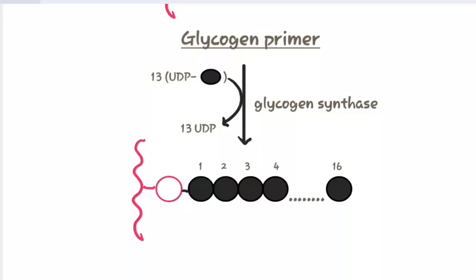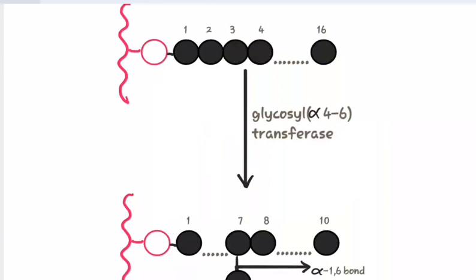A glycogen primer is formed. Now the transfer of glucose molecules from UDPG to the glycogen primer is done by the enzyme glycogen synthase. This enzyme is responsible for forming the 1,4 glycosidic bond.